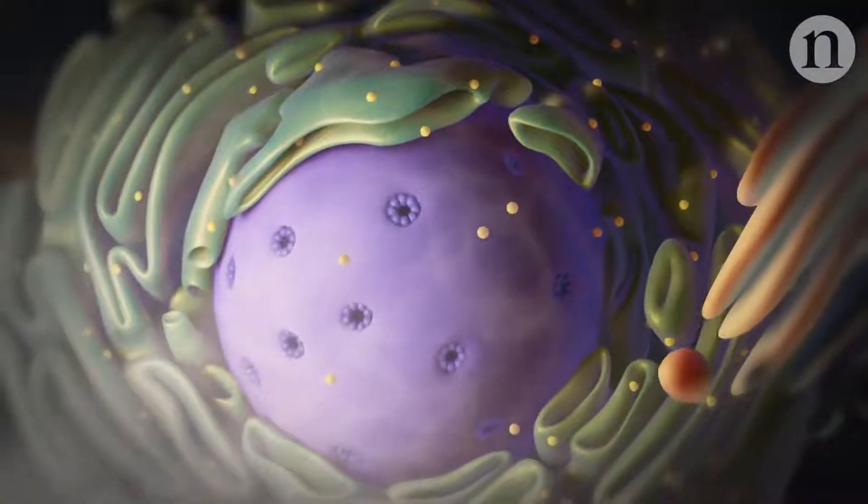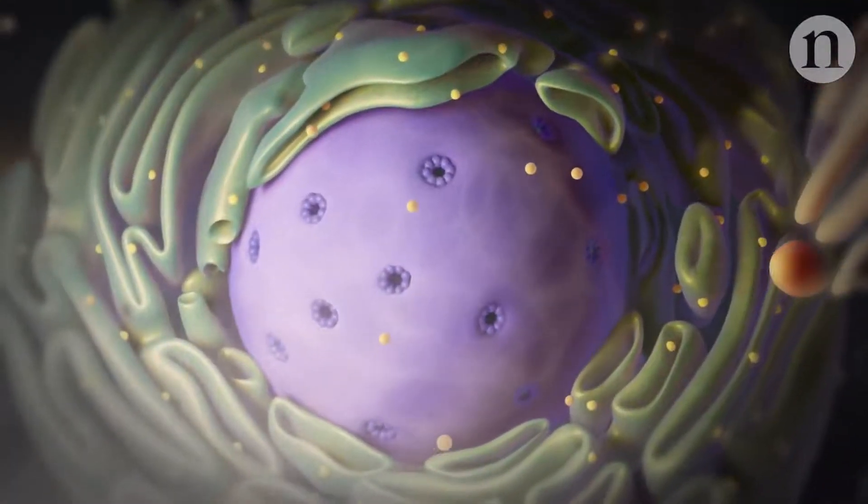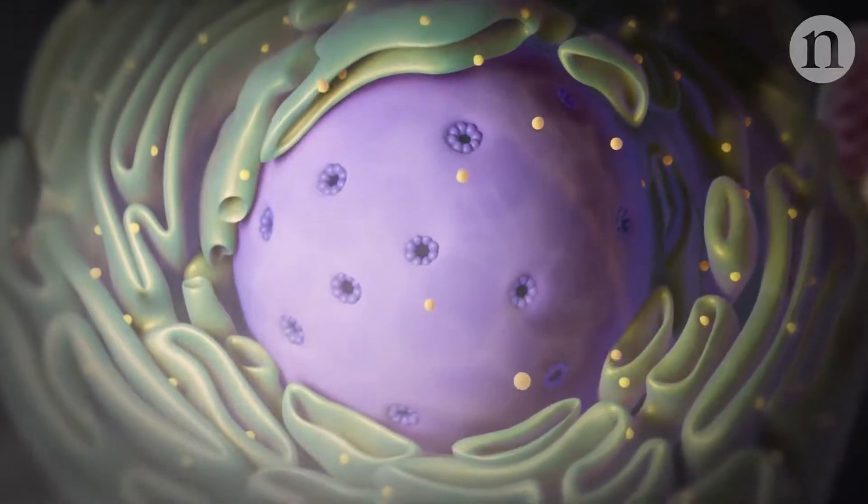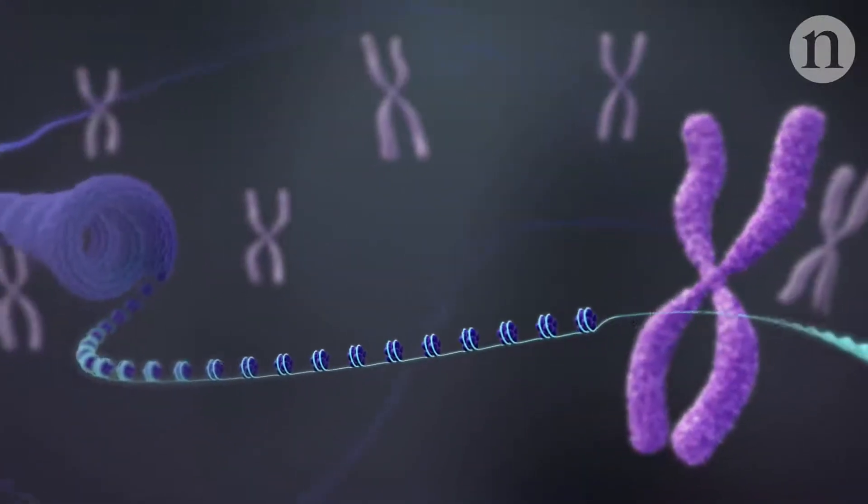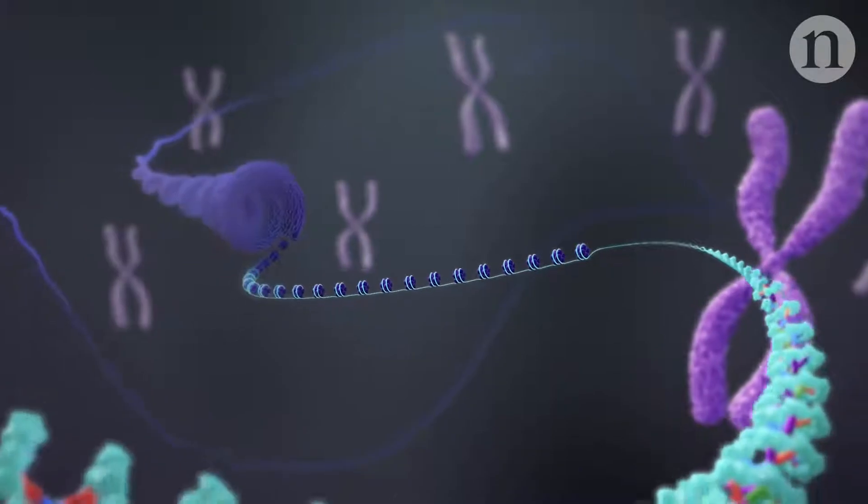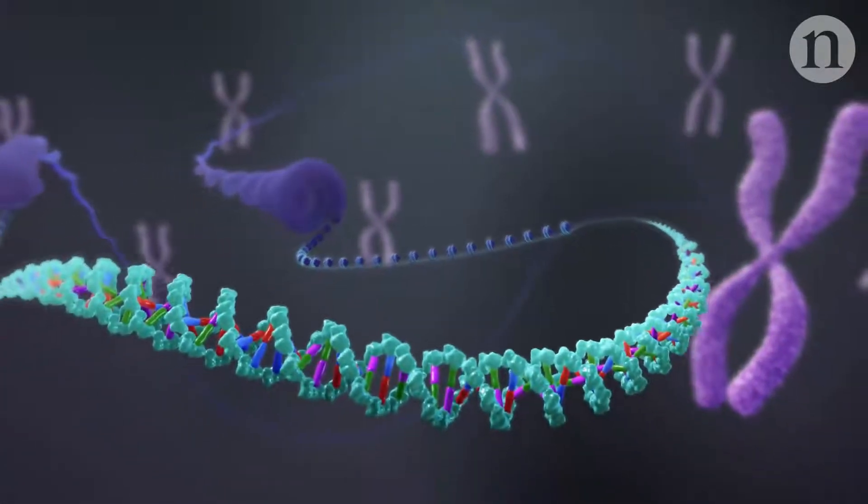The CRISPR-Cas9 system is a tool for cutting DNA at a specifically targeted location. The technique has already revolutionized gene editing, but scientists are always looking for new possibilities. So what else can CRISPR do?